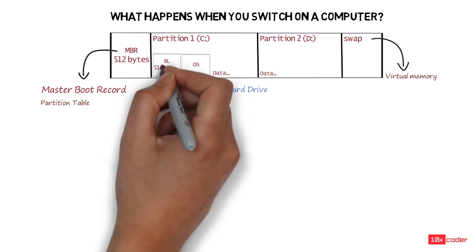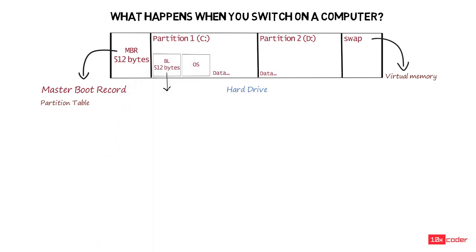then the first 512 bytes of that partition will contain a program known as bootloader. If you're wondering why there is a magic number of 512 bytes both in the case of MBR and bootloader, then we will take up this question in a few minutes. For now, we know the internal structure of the hard drive, so let's proceed to answer our original question.